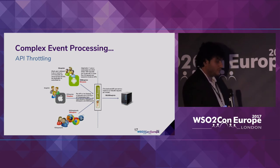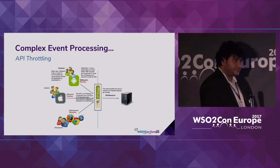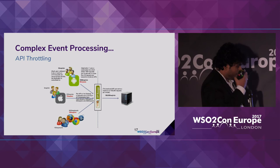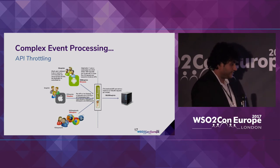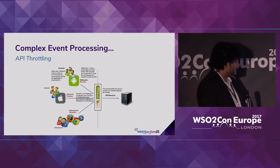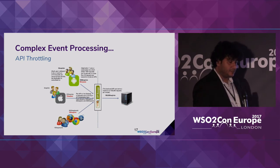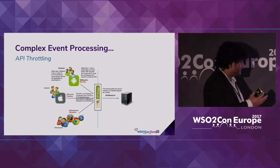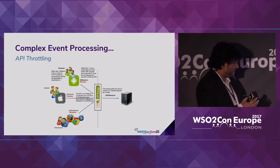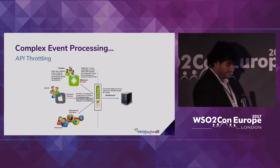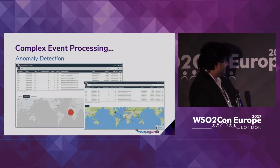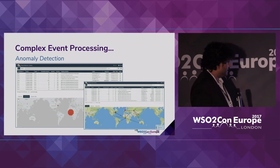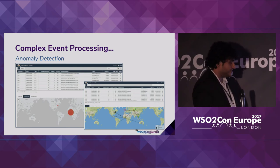As for throttling, we have extensively used complex event processing for our API throttling feature as well. If you look at our API manager product, which is housing our ESP engine, it's also doing API throttling via our real-time analytics. Any request throttling and anomaly detection has been done with this analytics. This is another external example of how anomaly detection is done using our CEP features — we have made several solutions to do anomaly detection using the messages being stored and so on.